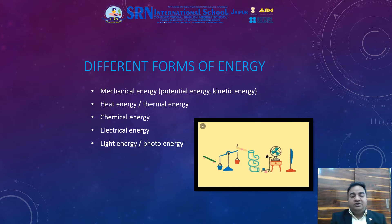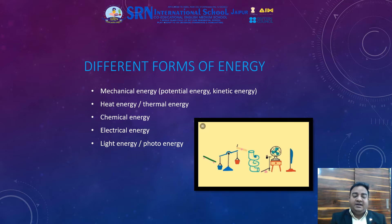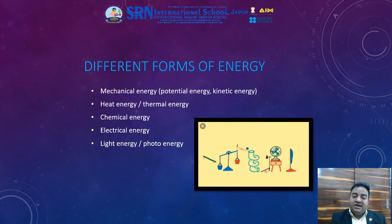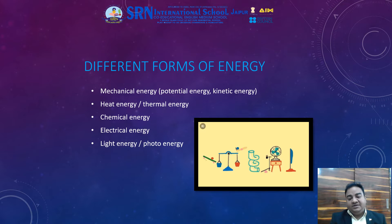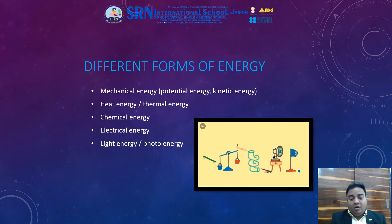Now let us understand about the different forms of energy. The different forms of energy are: mechanical energy, which can be potential energy or kinetic energy; then heat energy, which is a form of thermal energy; then chemical energy; electrical energy; and light energy. Light energy is also said to be photo energy. We will be studying all the forms of energy with the help of appropriate examples in the coming slides.